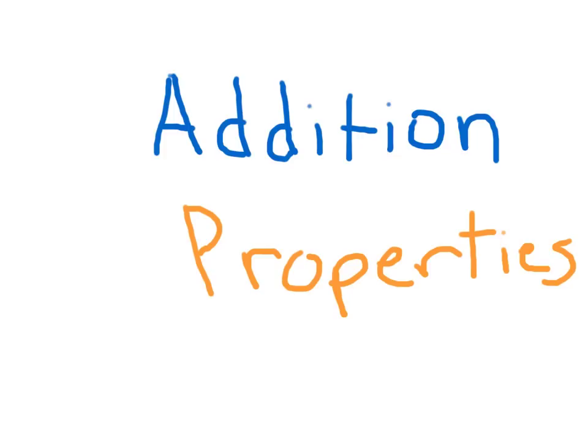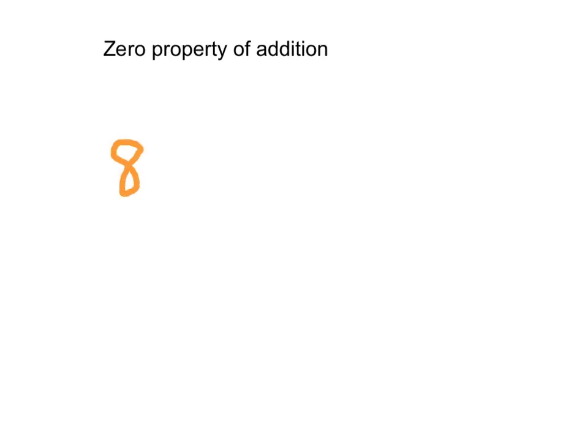Let's go ahead and go over some properties of addition. First off, we've got the zero property of addition. What the zero property of addition means and says is this: if we add zero to any number, we get that same number.